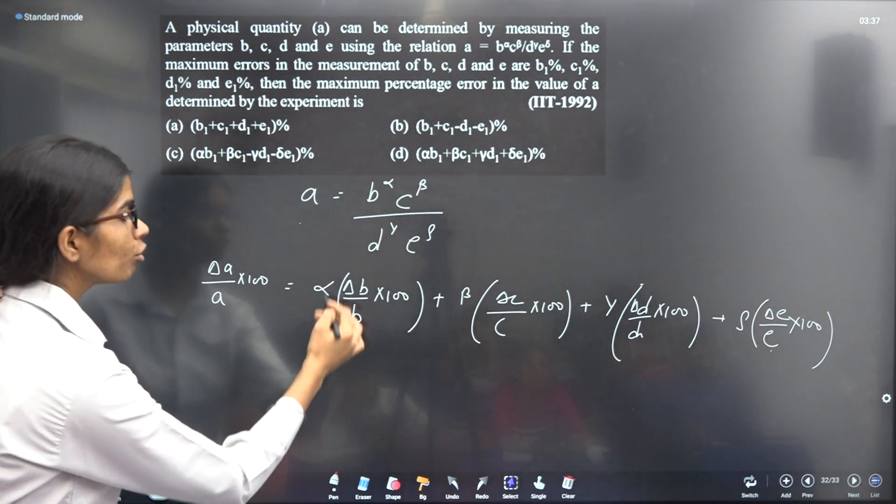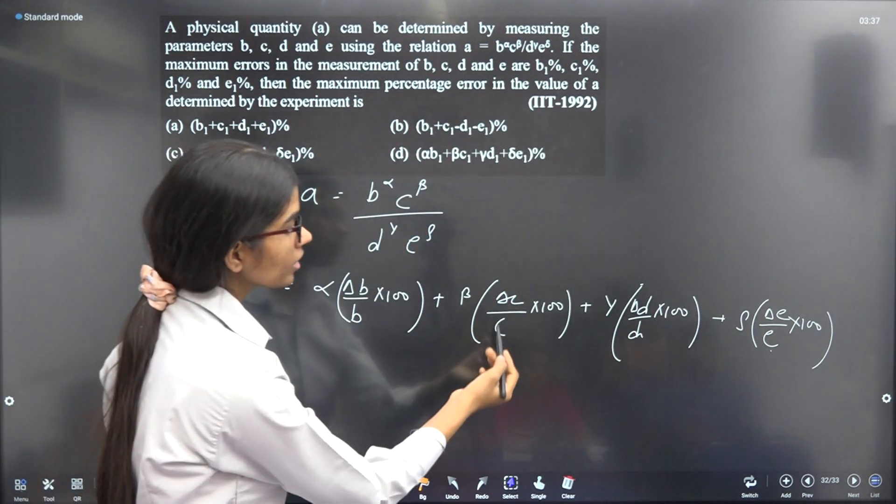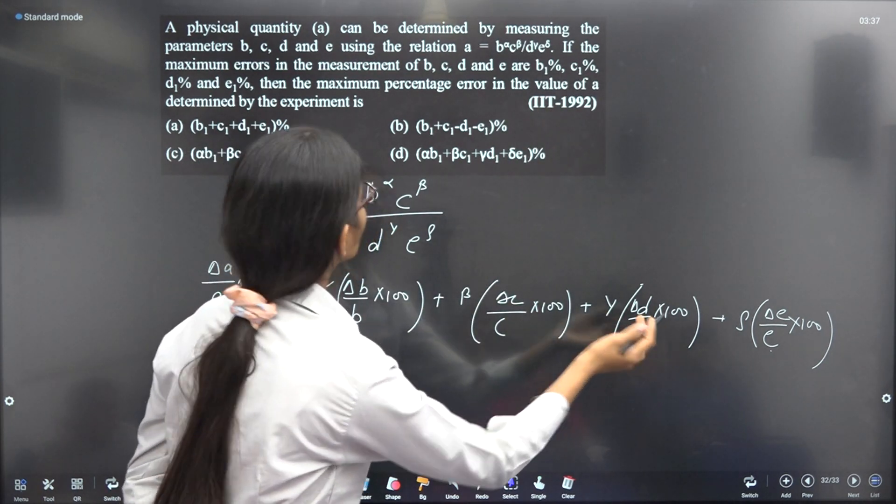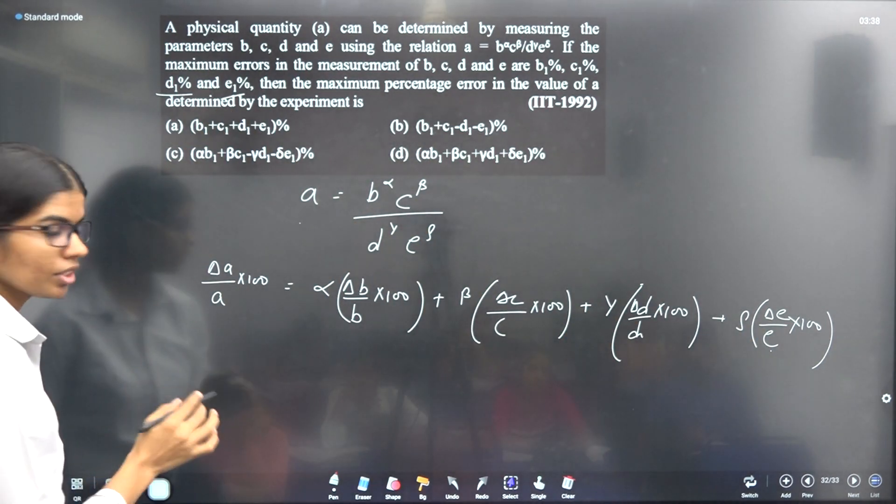Now, you can see the values: ΔB/B × 100 is given as B1%, ΔC/C × 100 is given as C1%, ΔD/D × 100 is given as D1%, and ΔE/E × 100 is given as E1%.